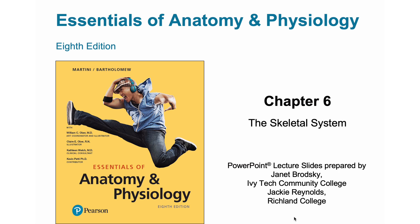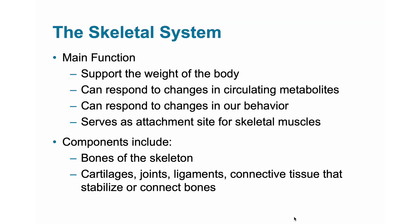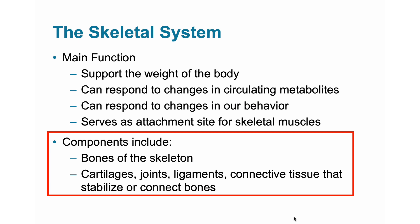As mentioned in Module 6.0, the skeletal system includes the bones of the skeleton, the cartilages, joints, ligaments, and other connective tissues that stabilize or connect the bones. Given the substantial diversity of these structures, it is not surprising that the skeletal system performs diverse functions. Keep in mind that not all structures of the skeletal system are able to perform each of these functions, but that as a system these functions are provided by specific members of the system.